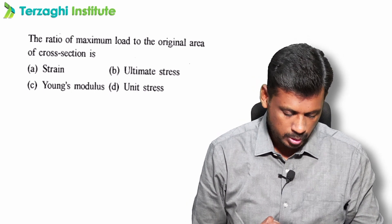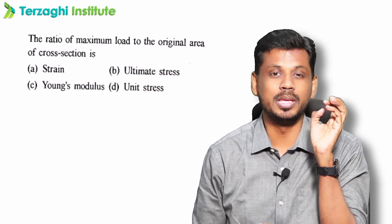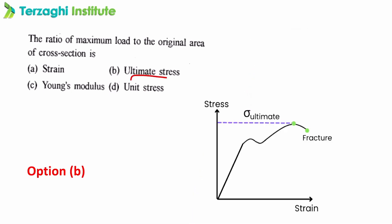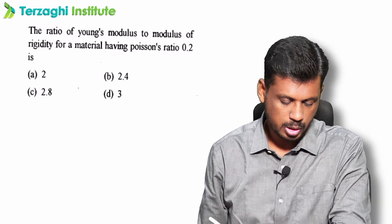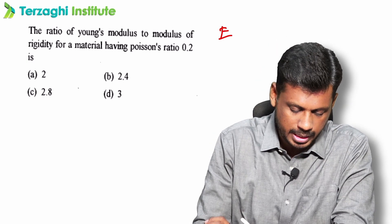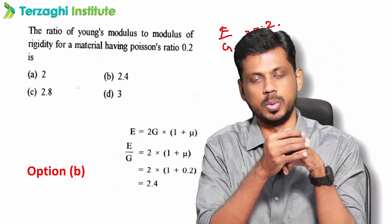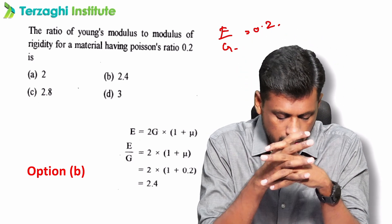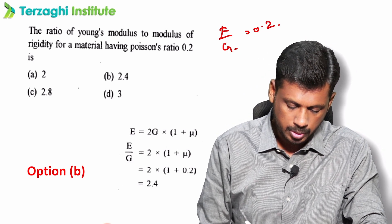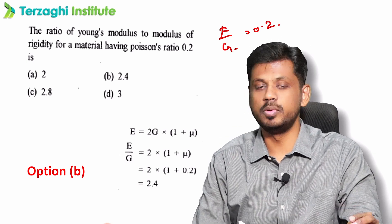The ratio of maximum load to original cross-sectional area is ultimate stress. The ratio of Young's modulus to modulus of rigidity (E by G) — if Poisson's ratio mu is 0.2: E equals 2G(1 plus mu), so E by G equals 2(1 plus mu) equals 2 times 1.2 equals 2.4. Use this formula for numerical problems.